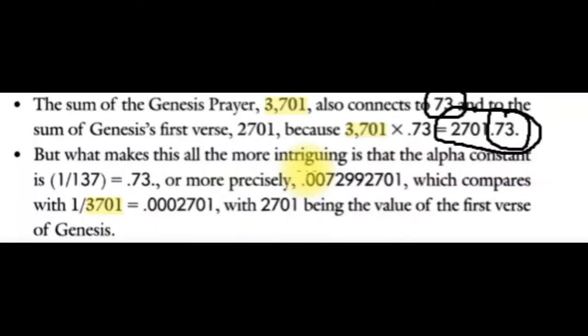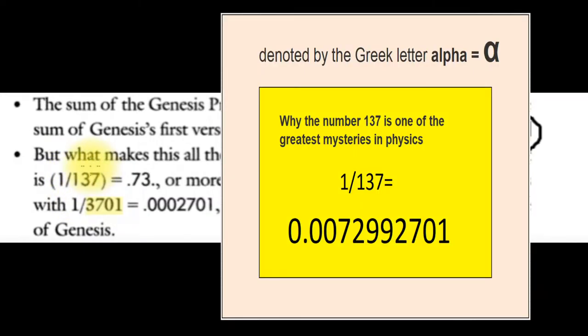The alpha constant that is used in microphysics to explain how we exist. The reciprocal of 137 is 0.73, 0.0072. 72 equals the tetragrammaton.